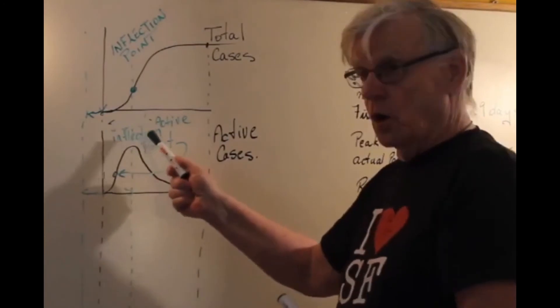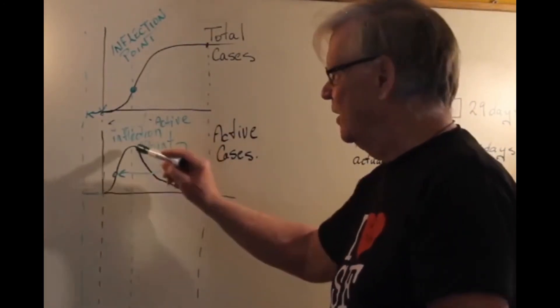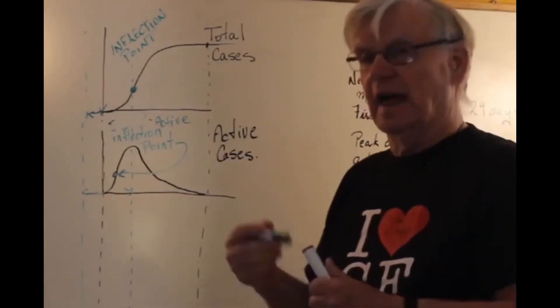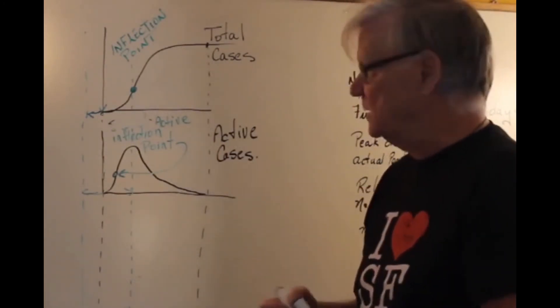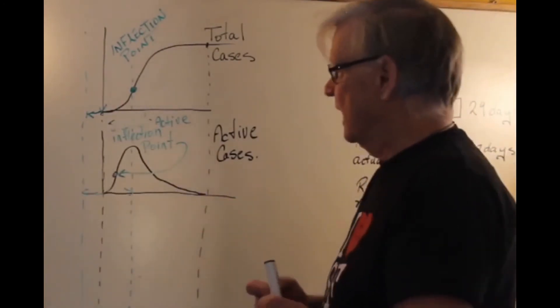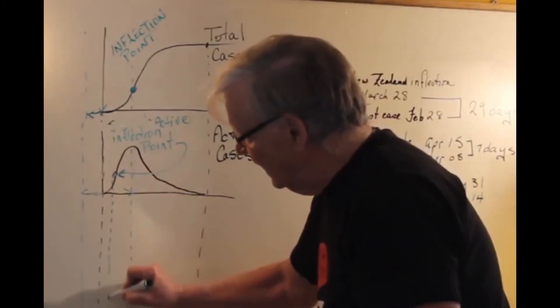If you reach the inflection point, most countries have. A lot of countries have reached the inflection point. Only four that I know of: Taiwan, South Korea, Vietnam, and New Zealand, and there may be other countries. I'd really like to know about them because that way we can get better and better data for those countries that haven't reached there yet.